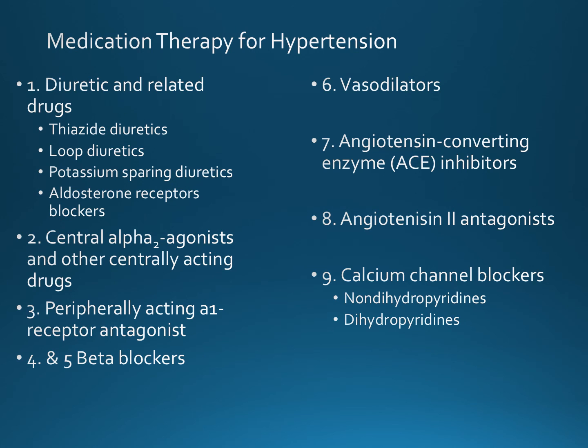This slide explains the various categories of medications for hypertension. First, there are diuretics that decrease plasma and extracellular fluid volumes, resulting in decreased preload, decreased cardiac output, and decreased total peripheral resistance — with the overall effect of decreasing the workload of the heart and decreasing blood pressure.